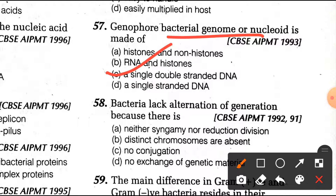Question number 57: the bacterial genome is made up of a single double stranded DNA, which is haploid but double stranded. Question number 58: bacteria lack alternation of generation because they have neither syngamy nor reduction division.